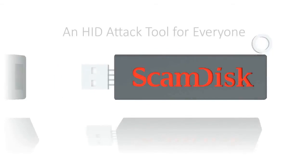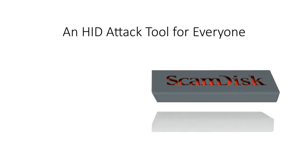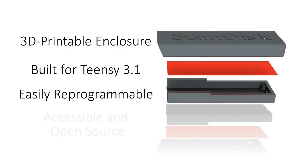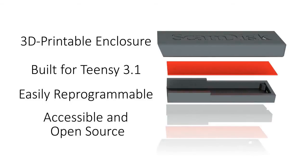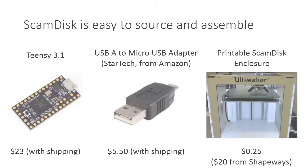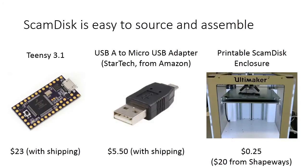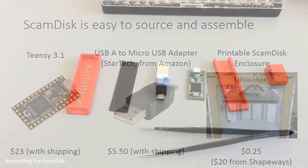To solve this problem, we decided to make our own device — the ScamDisc. It's a USB attack tool disguised as a flash drive that allows you to execute human interface device attacks. The ScamDisc has a 3D printable enclosure and is built around the Teensy 3.1, which is easily reprogrammable thanks to the Arduino framework. It's also open source and highly accessible. The Teensy 3.1 is readily available online for about $20. You also need a USB-A to micro USB-B adapter from StarTech, and we removed the rubber casing to make it fit better. The 3D printable enclosure can be made on any FDM printer, meaning manufacturing the parts that can't be bought off the shelf costs about 25 cents.